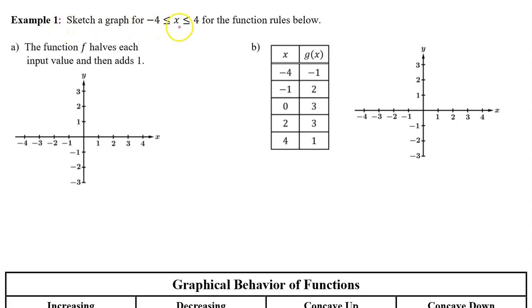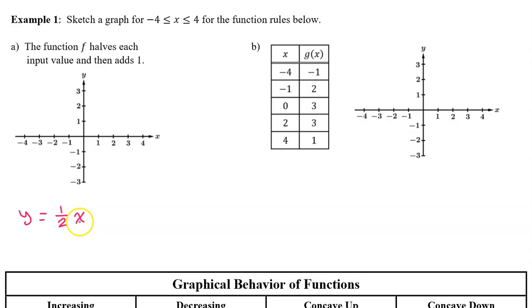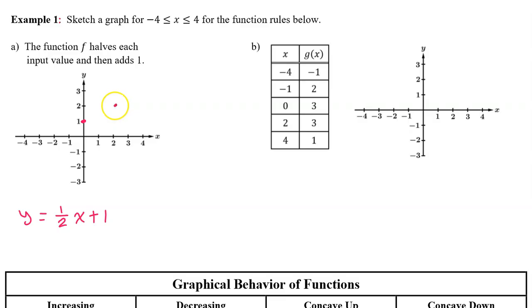Example 1: Sketch a graph for the closed interval from negative 4 to 4 for the function rules below. Part a: the function f halves each input value and then adds 1. If we let x represent the input and y the output, the function is y = (1/2)x + 1. This is a linear function with a y-intercept at 1 and a slope of one-half. Going up 1 and over 2 repeatedly traces the line to the end of the interval.